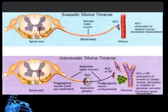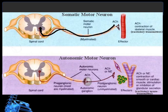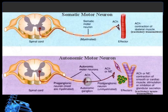Here is a diagram showing the difference between a somatic motor neuron and an autonomic motor neuron. The somatic motor neuron deals with voluntary function, specifically the skeletal muscles. Notice that there is only one neuron that sends information from the spinal cord to the effector organ, which in this case is the skeletal muscle. In the autonomic motor neuron, which deals with involuntary body functions, there are two nerves, and they synapse or have a junction at the ganglion.